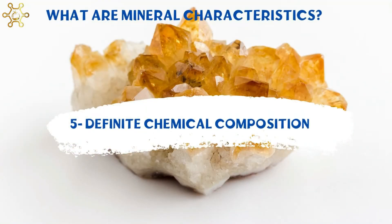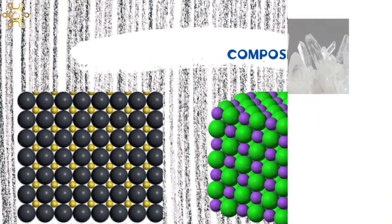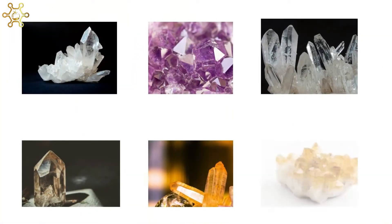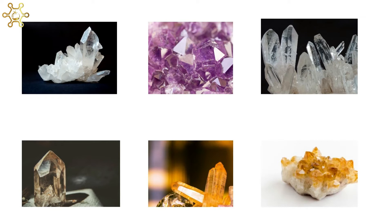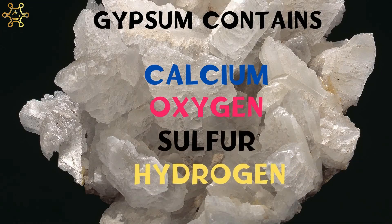Number 5: Definite chemical composition. A mineral has a definite chemical composition. Gypsum, for example, always contains calcium, oxygen, sulfur, and hydrogen in set proportions.